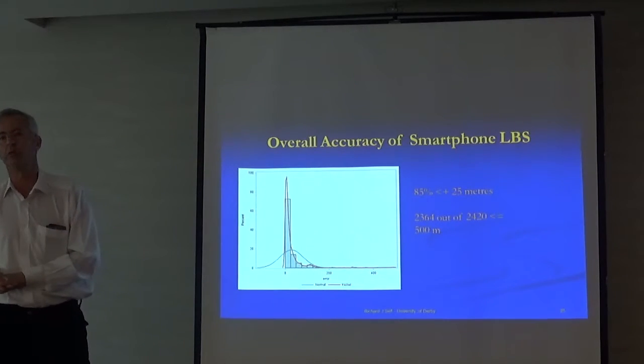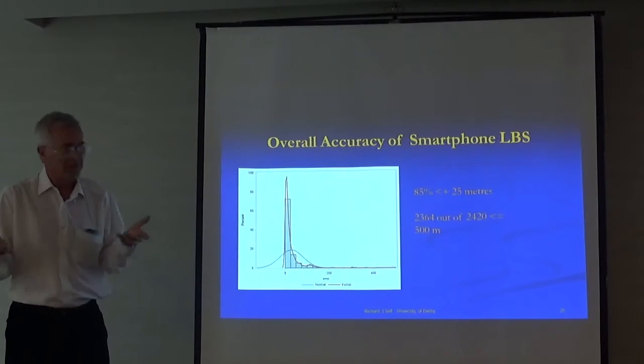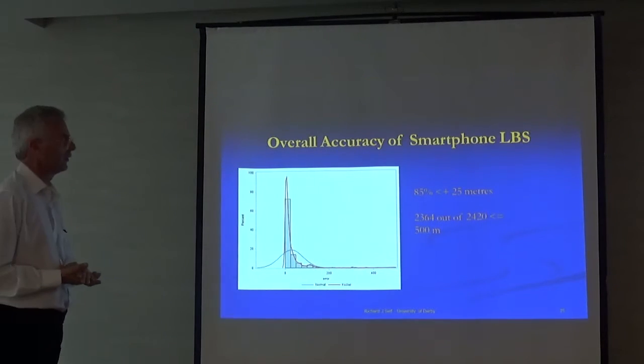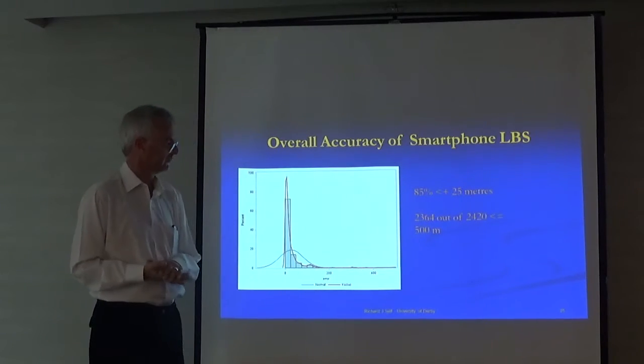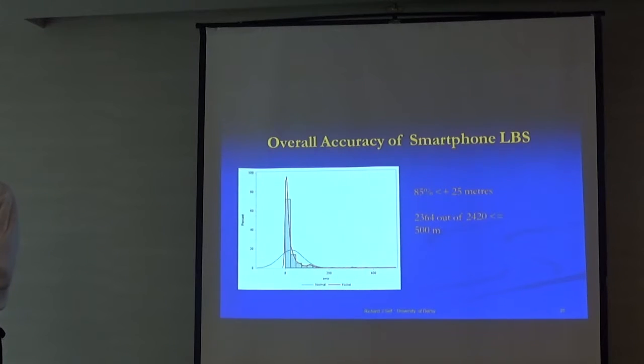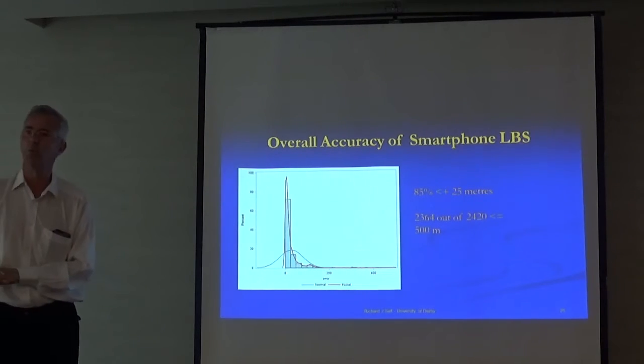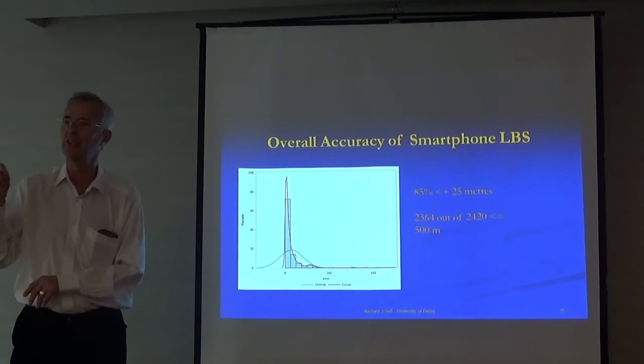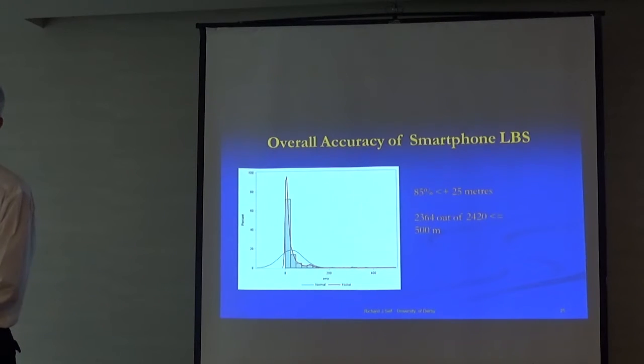Overall across the 2,300-2,400 photos that all the students took, 85% were within about 25 meters of where the phone actually physically was. The problem comes with the ones that aren't there. A large portion were within 500 meters, but there is still about 60 photos which were worse than 500 meters error, and they are going to cause the businesses who rely on those readings significant problems. So that comes back again, summarizing the data and reinforcing the significance of why the research has impact.